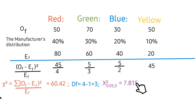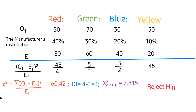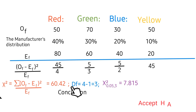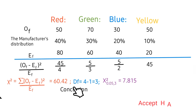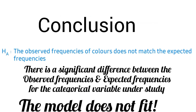Since our test statistic of 60.42 is greater than the critical value of 7.815, we reject the null hypothesis and accept the alternative hypothesis. Our conclusion is that the observed frequencies of colors do not match the expected frequencies. We have succeeded in testing this hypothesis.